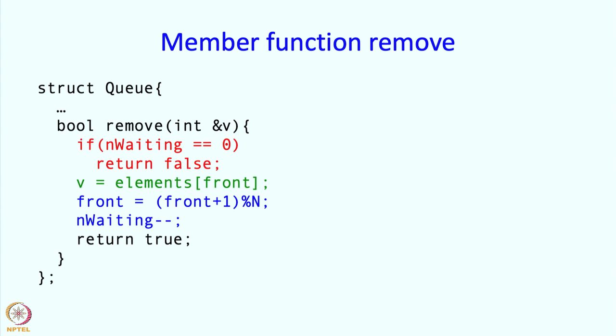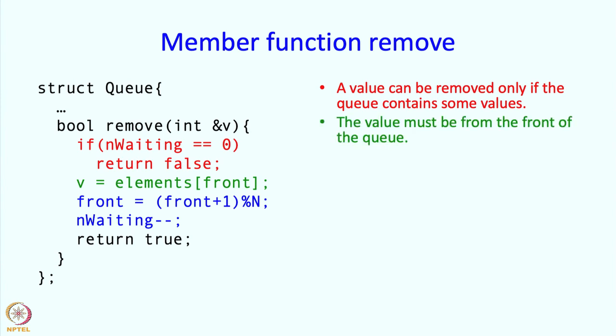Member function remove is somewhat similar. We check whether the queue contains some values, otherwise we return false. The value to be removed should come from the front of the queue. We take the value from the front and we increment front, but this increment must be this circular increment. If we're already at the last element, then we should go back to the 0th element. And of course n waiting should decrease.